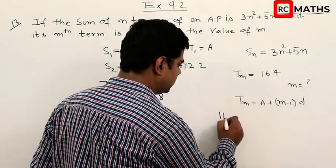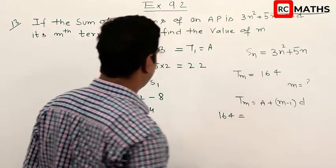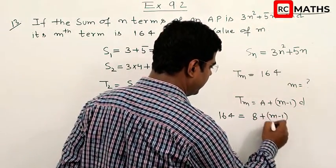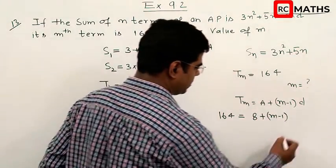Tm is 164. a is 8, and d is T2 minus a, which is 14 minus 8 equals 6.